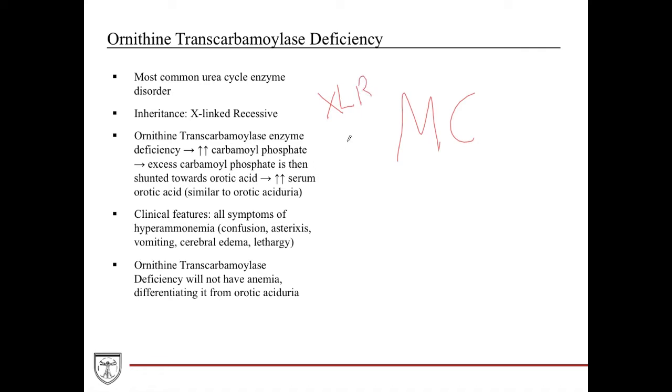It's X-linked recessive, and what happens is you have a deficit or absence of ornithine transcarbamylase, which causes an increase in carbamoyl phosphate, which then causes it to be shunted towards orotic acid. What happens is now you have an increase in serum orotic acid, which can cause the features pretty much like all of these.